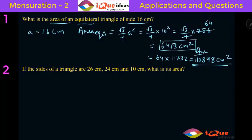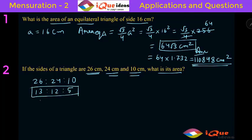Now let's take up the second question. It says if the sides of a triangle are 26 centimeter, 24 centimeter and 10 centimeter, what is its area? Now there are two ways of doing this question. One is to take the ratio of the sides. It is 26 is to 24 is to 10. If you divide by 2, it is 13 is to 12 is to 5. Now 5, 12, 13 is actually a right angle triangle — this is a Pythagorean triplet.